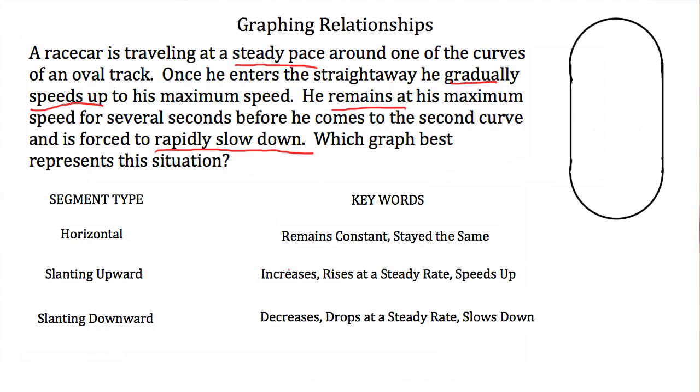There are some other key words that are typical in problems. For a horizontal segment type, remains constant or stays the same. For a slanting upward segment type, increases, rises at a steady rate, or speeds up. And then a sliding downward segment is usually represented by key words that show a decreasing, or a drop, or a slowing down of whatever the problem is discussing.